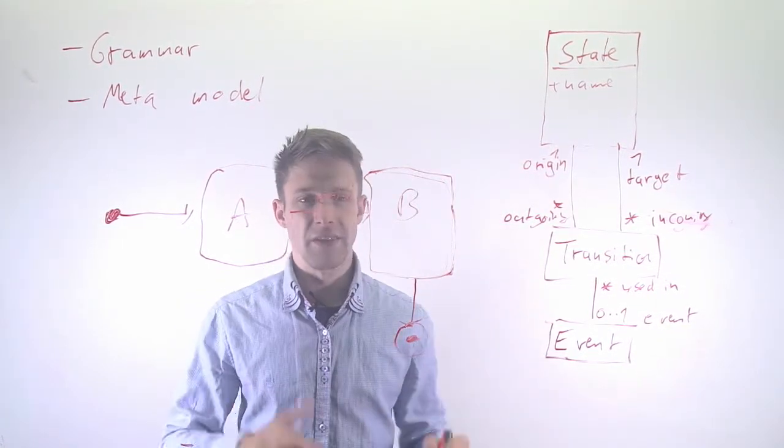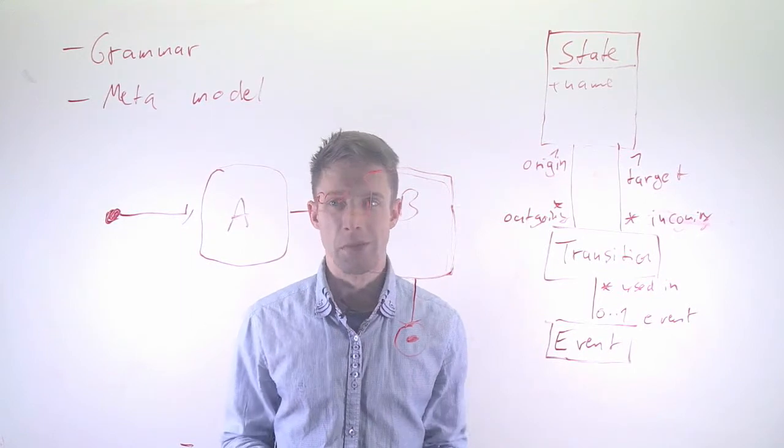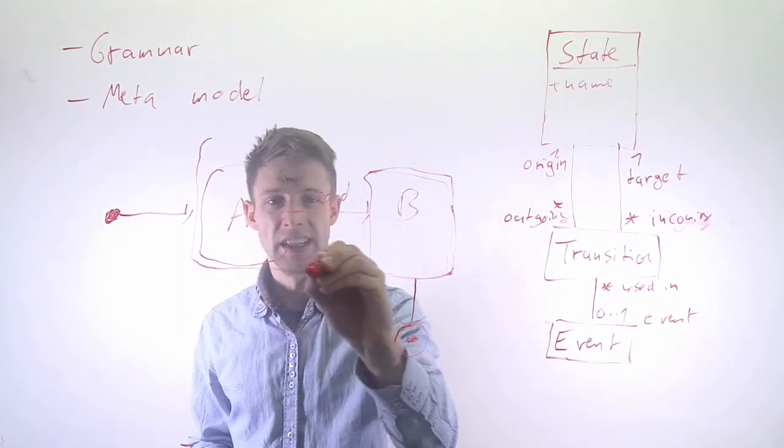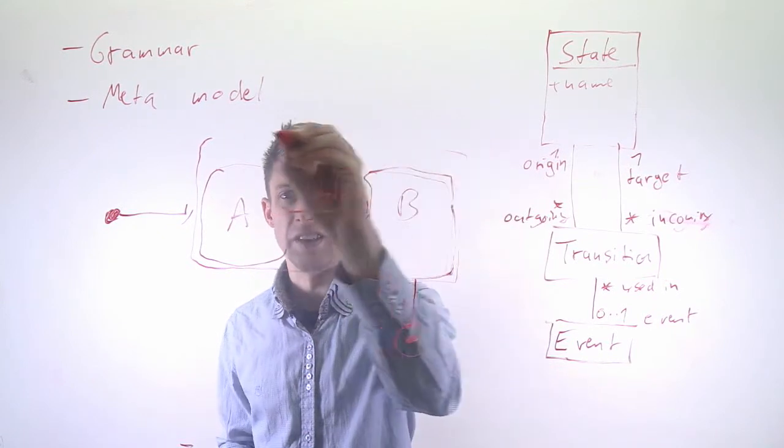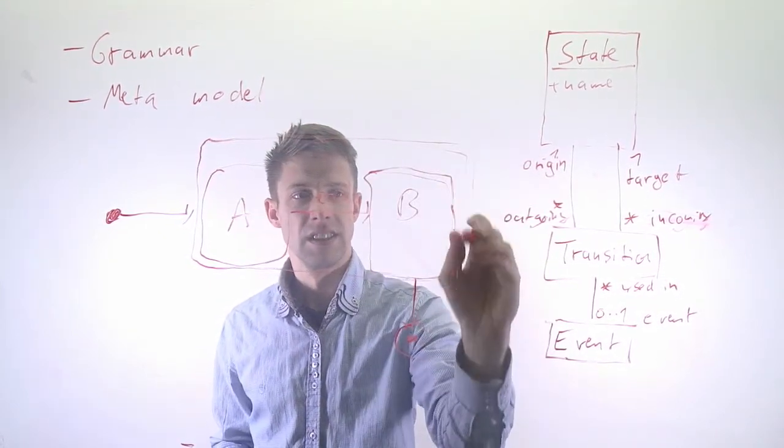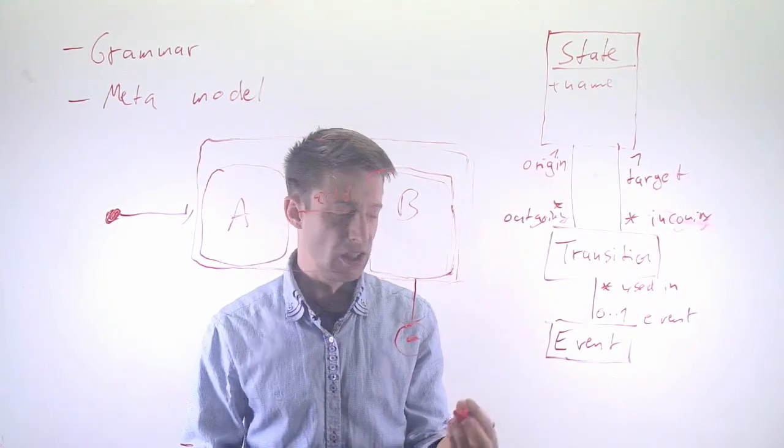And each event could theoretically be used in a number of transitions. So that's what we have there, then of course you can start making this more complex. For example, in the UML state machine diagram we have a parent state, so we have hierarchies.